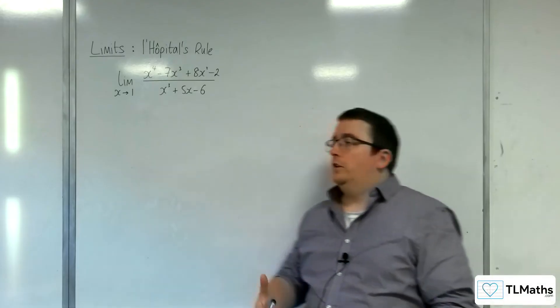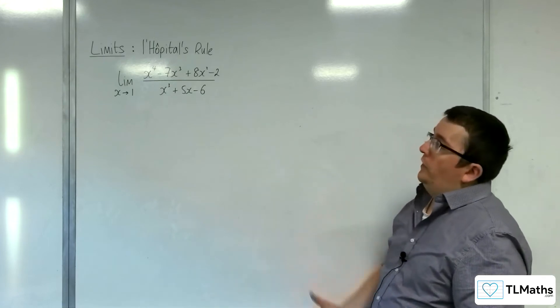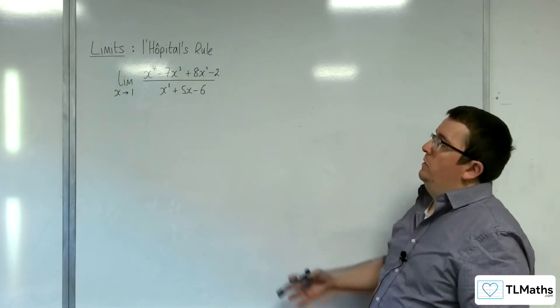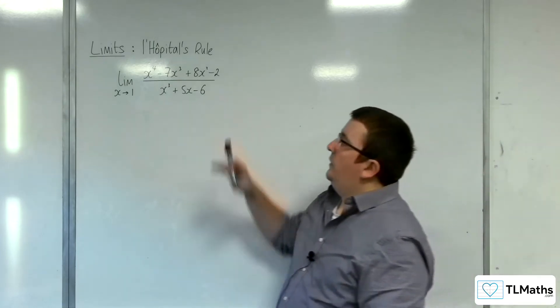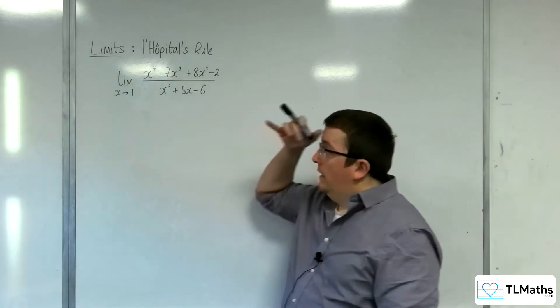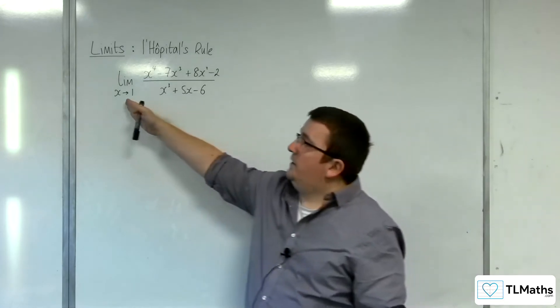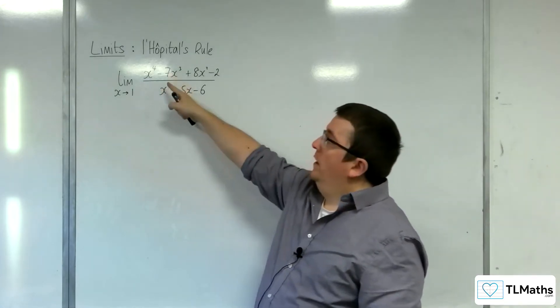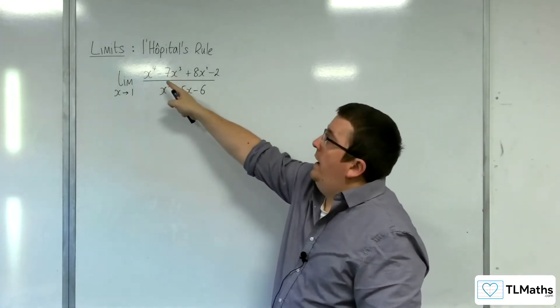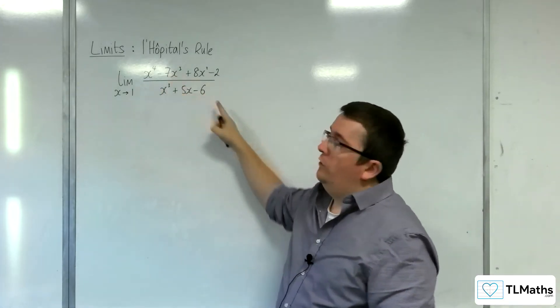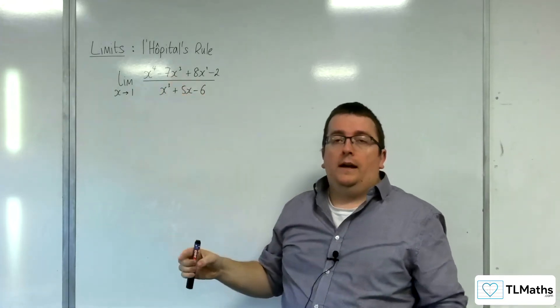In this video, we're going to take a look at an example of using L'Hôpital's rule. We've got the limit as x tends to 1 of a quartic over a cubic.